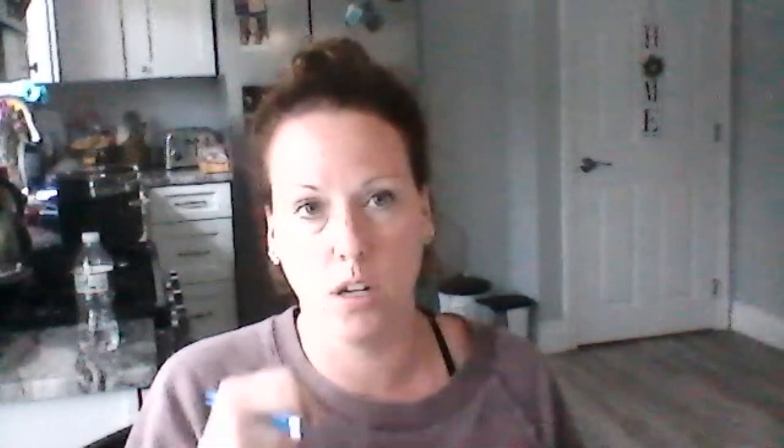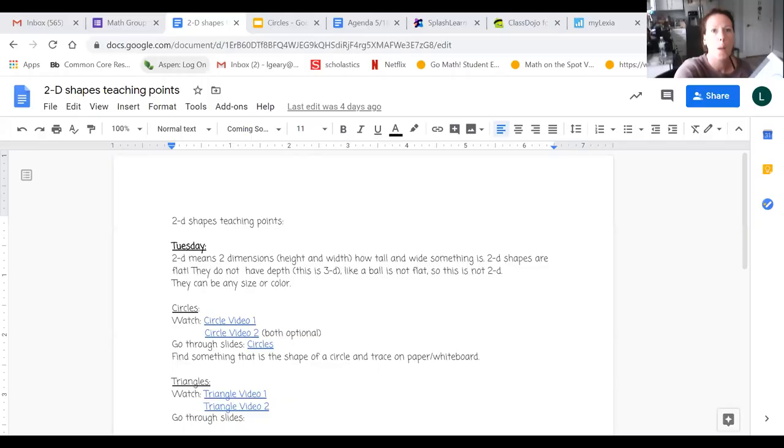A lot of shapes that we make have straight lines, but a circle is different because it's a curved line. If you can remember back to when we first started writing, we were talking about curved lines.